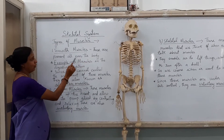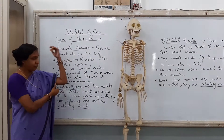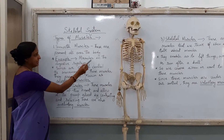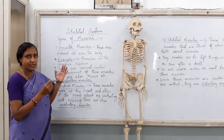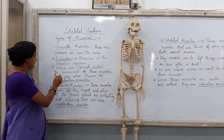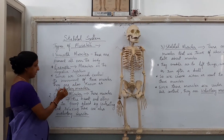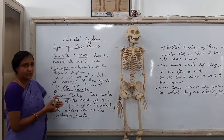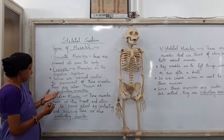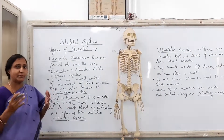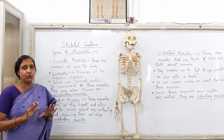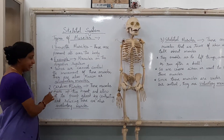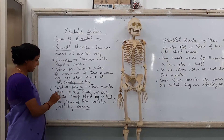Children, smooth muscles are present all over the body. You can also feel from your own self — every part you are having muscles. For example, muscles in the digestive system are an example of this kind of muscle. Since we cannot control the movement of these muscles, they are also known as involuntary muscles. This muscle helps in the digestion of the body. Since digestion takes place on its own and we don't have to do anything for this, that is why it is called involuntary muscles.